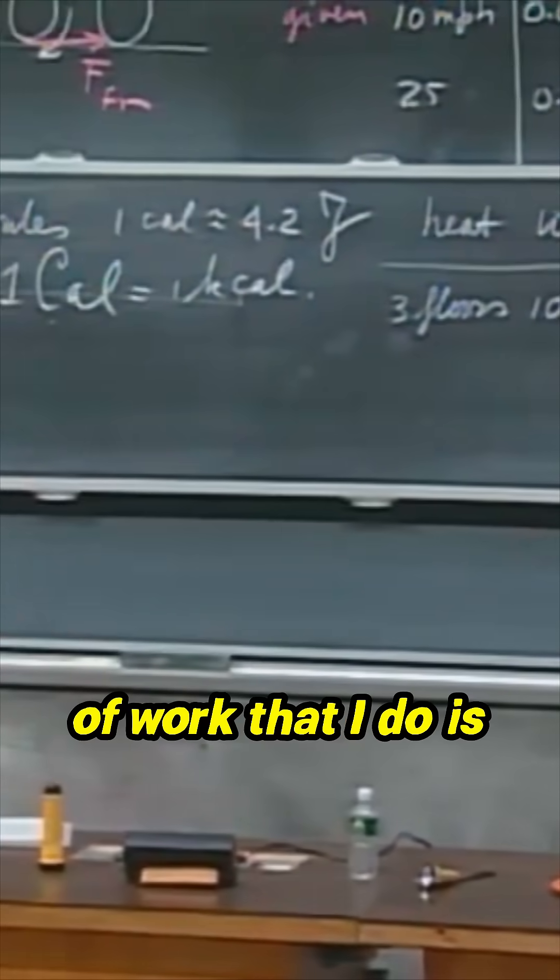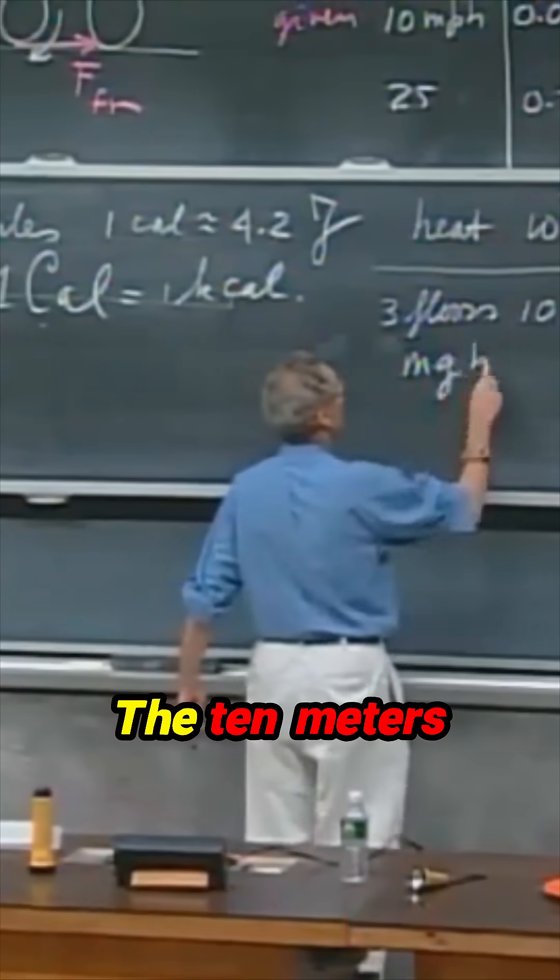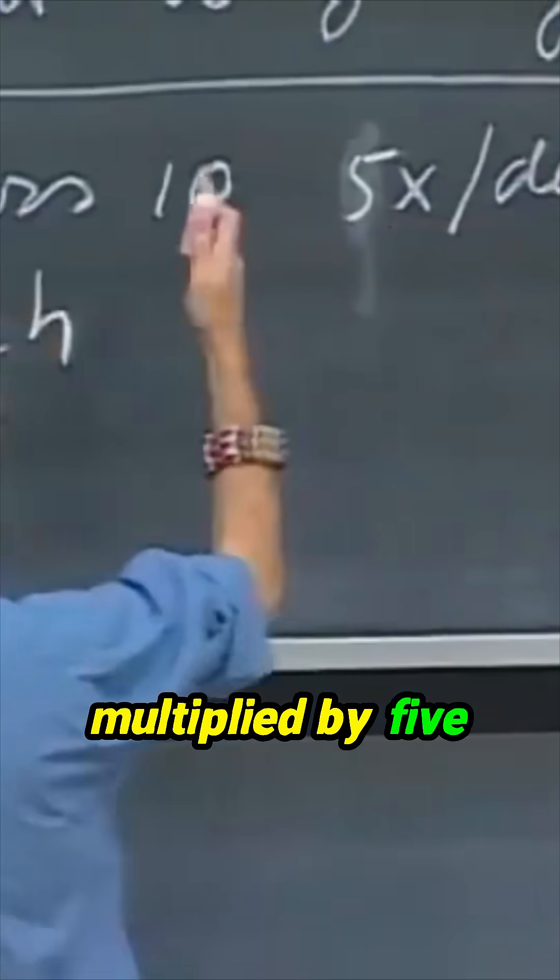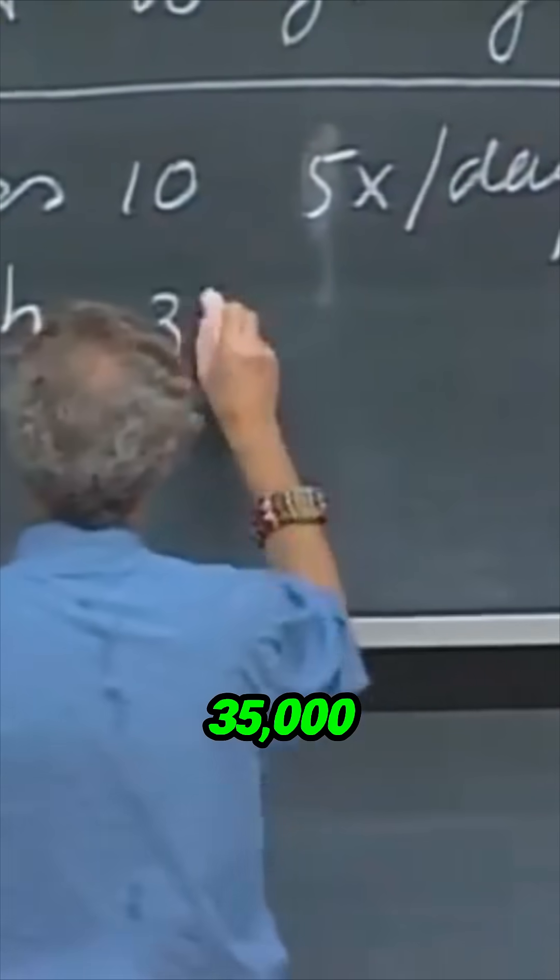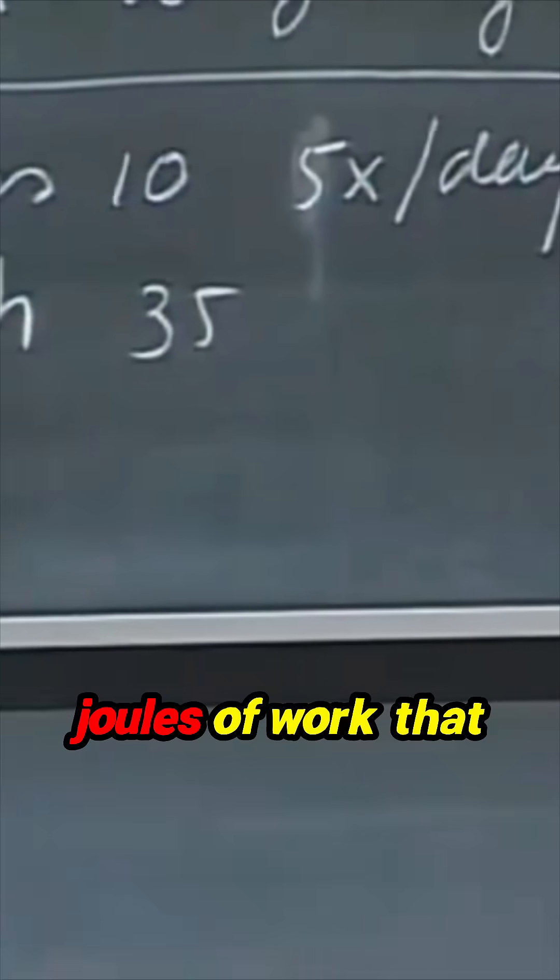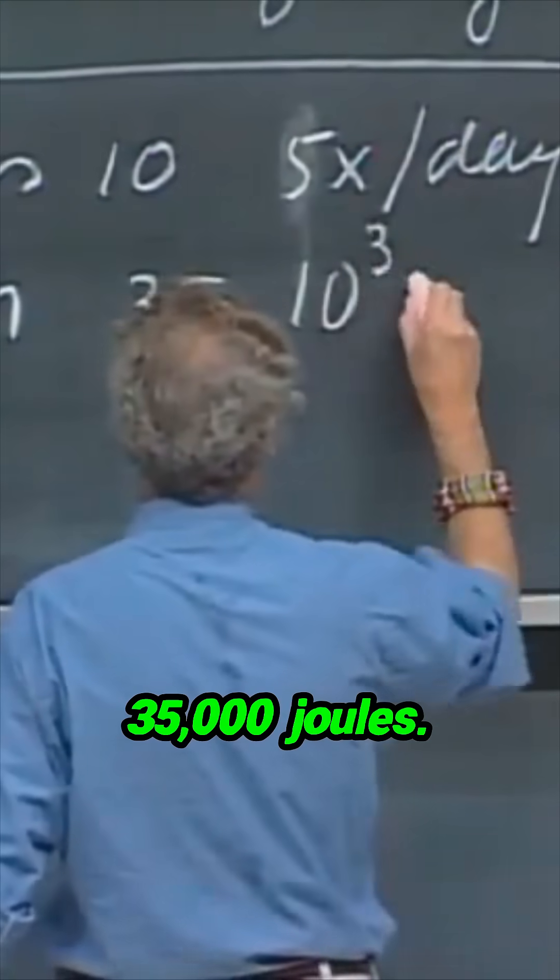Well, the amount of work that I do is MGH. The ten meters have to be multiplied by five because I do it five times. And so I get 35,000 joules of work that I do. 35,000 joules.